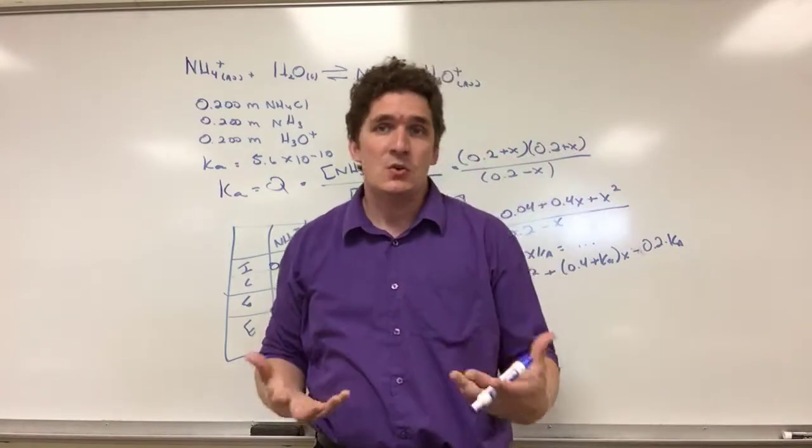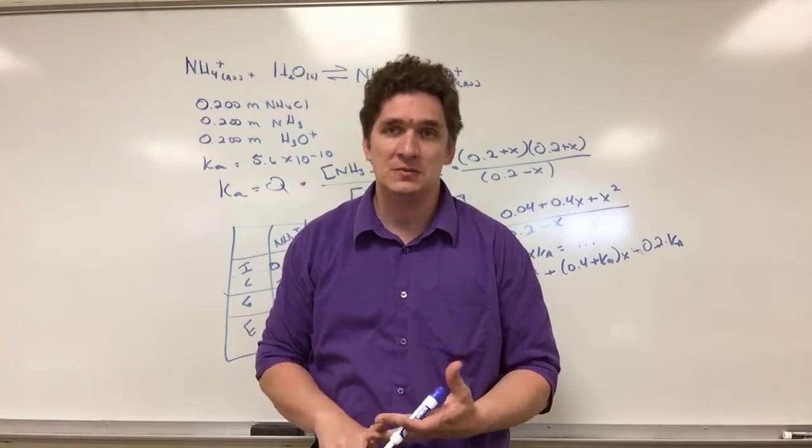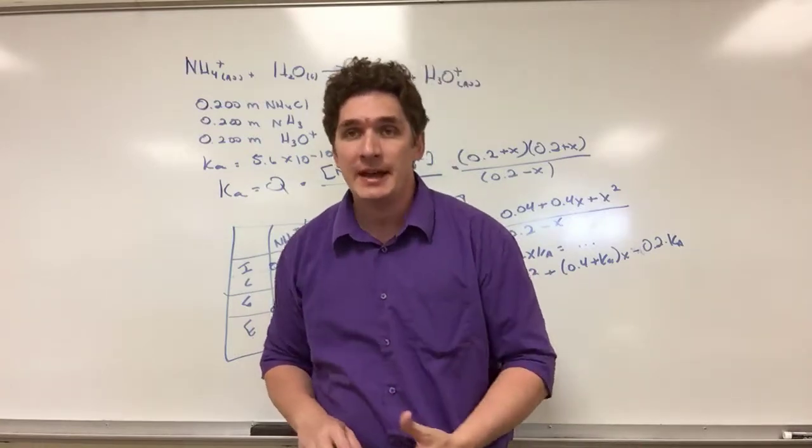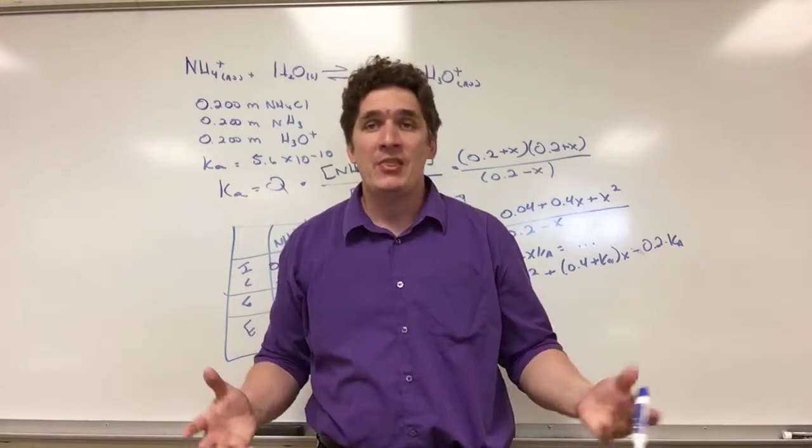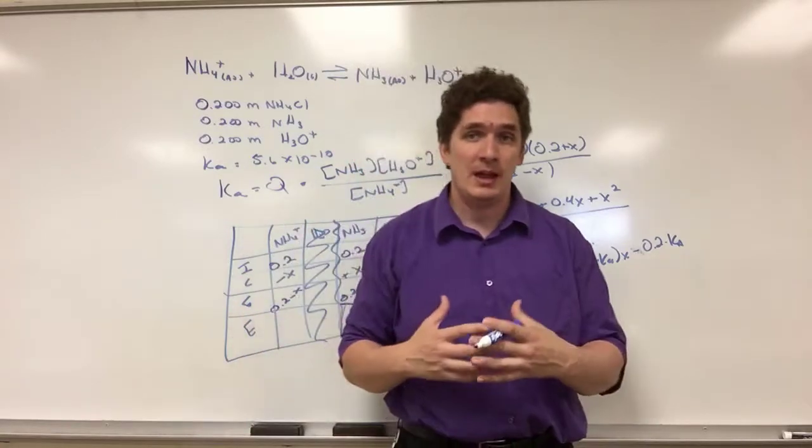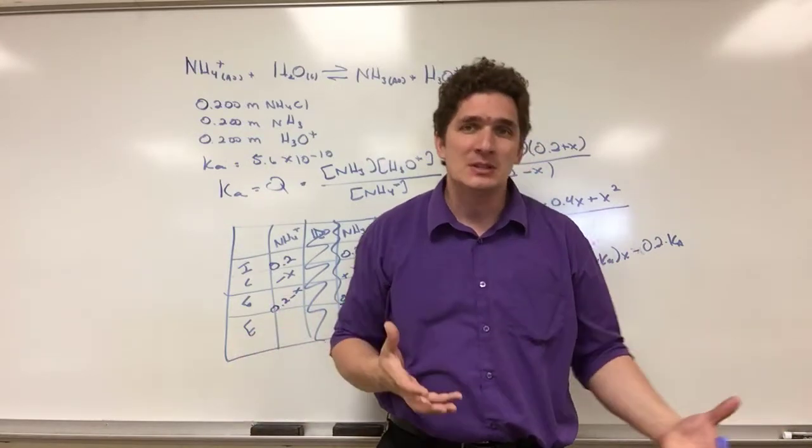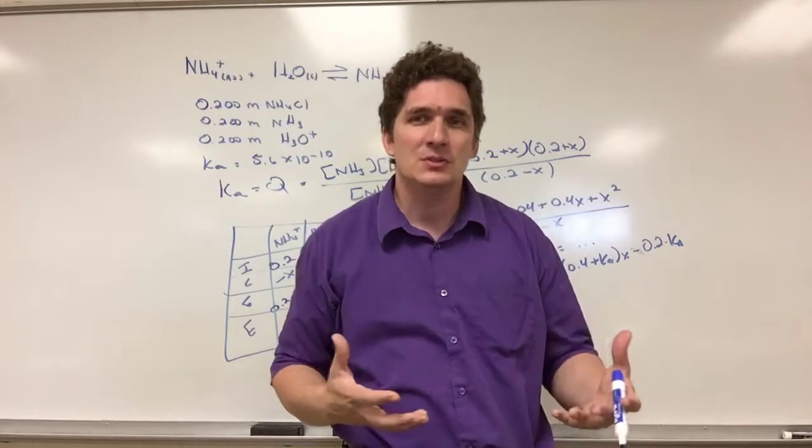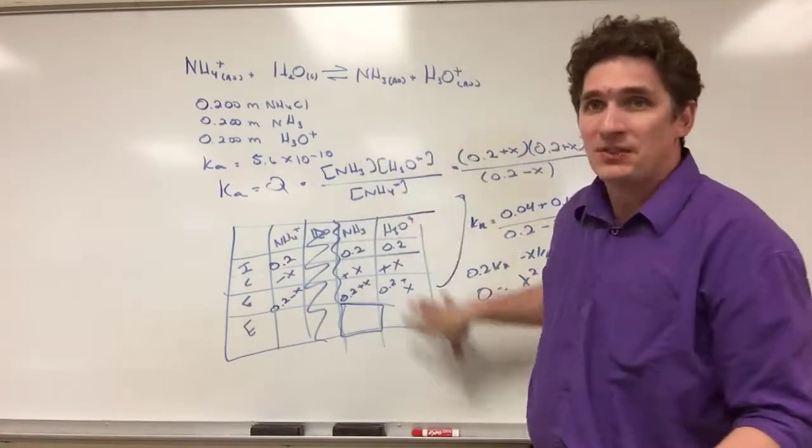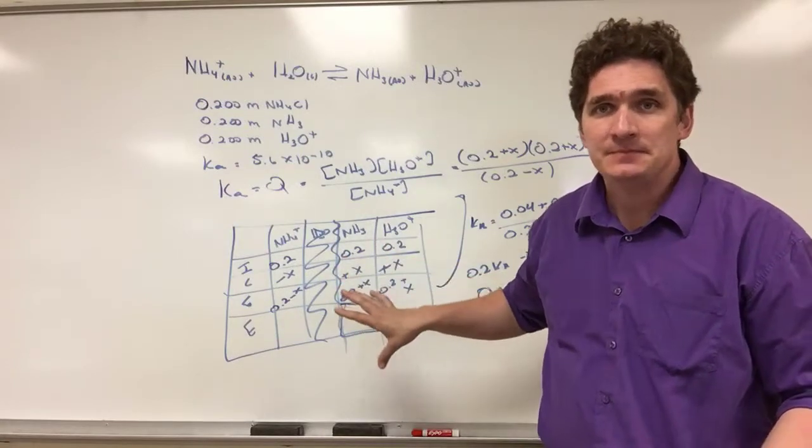The big thing is it's always the same three components: Ka equals Q, your expression for Q, and your ICE table with the values you know and the values you're being asked to find. Once you've got that, the only way to really make these problems hard is to give you a wealth of algebra to solve. But that's not really focusing on the chemistry - that's kind of losing the forest for the trees there. I can give you really hard algebra problems, but if you can get this far and set this up correctly, you understand the concepts.